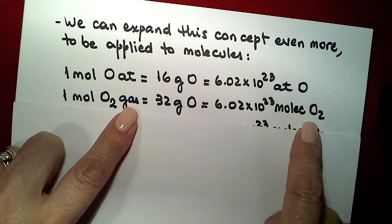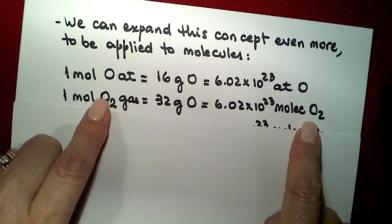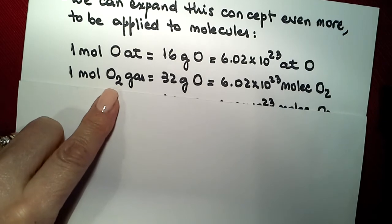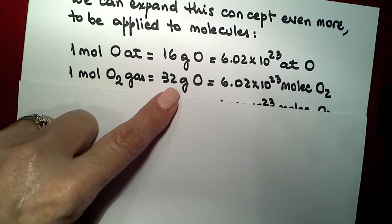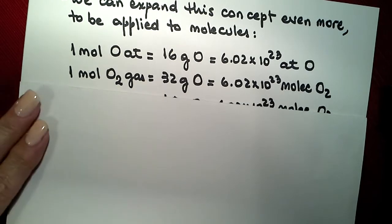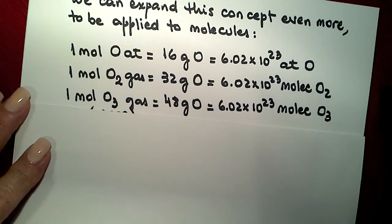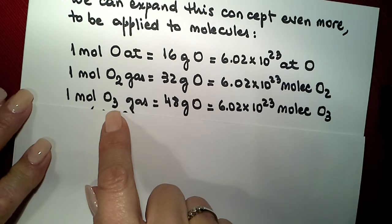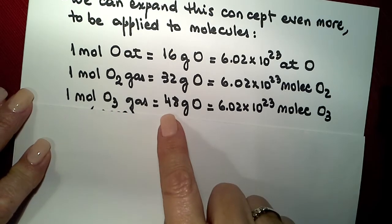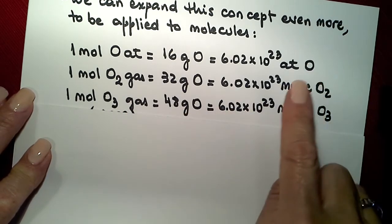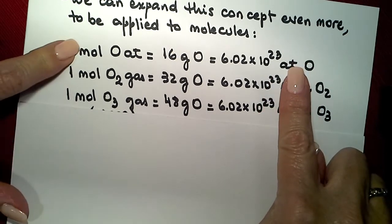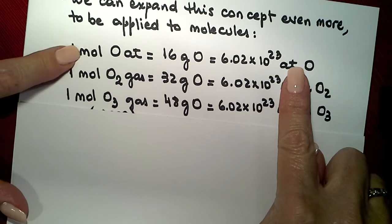How do we calculate the mass of that? Well, we just add up all the atoms that are present with the masses, and we are going to have, in this case, 32 grams for the oxygen gas. Or, if we have ozone, since the molecule of ozone is made of three atoms of oxygen, the mass will correspond to 48 grams of oxygen.